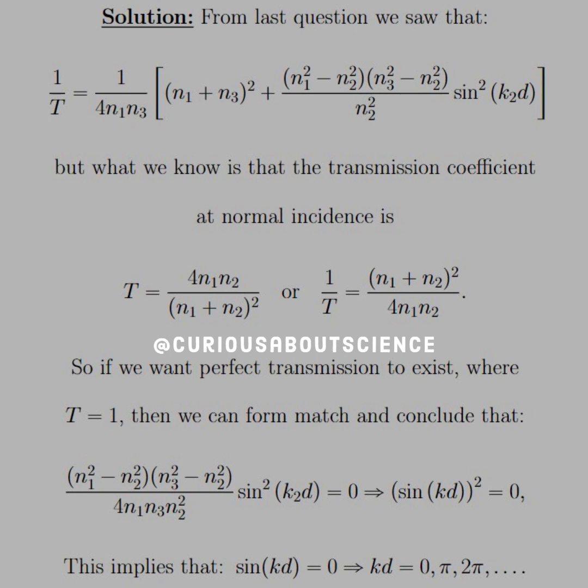But we know that the transmission coefficient at normal incidence is 4n1n2 over (n1 + n2) squared, or take the reciprocal of that. And so if we want perfect transmission to exist, T has to equal 1.